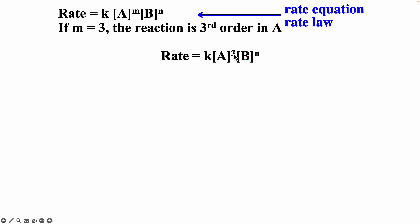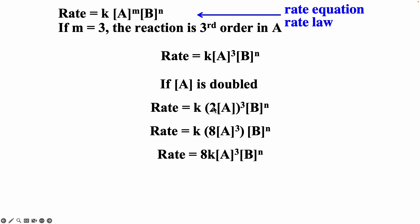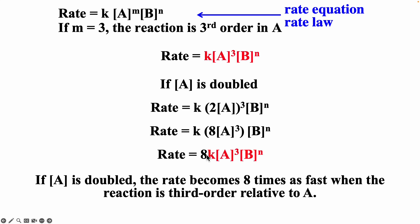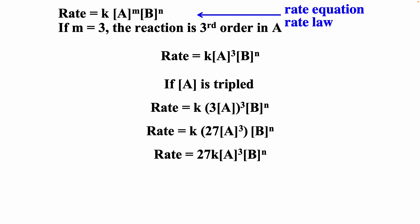If m equals 3, that's third order with respect to A. If we double A, the concentration and the 2 get cubed: 2×2=4, 4×2=8, so the rate is eight times as fast. If you want to figure out what the exponent is, you change the concentration and see how much faster it is — if you double the concentration and the rate becomes eight times as fast, it must be third order with respect to A. If we triple the concentration and it's third order: 3×3=9, 9×3=27 — it will be twenty-seven times as fast.